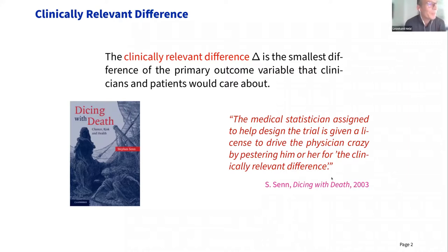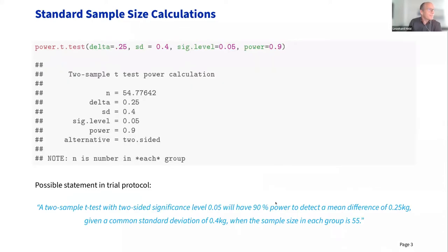This is a crucial component in standard sample size calculations for clinical trials, even if it is difficult to elicit. For example, with a continuous outcome and a clinically relevant difference delta of 0.25, using the R function power.t.test gives you a sample size of 55 in each group, sufficient to achieve 90 percent power.